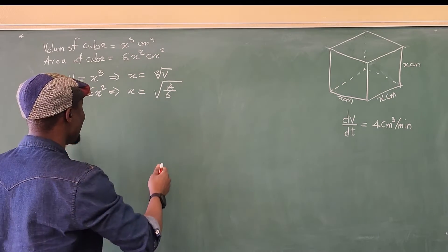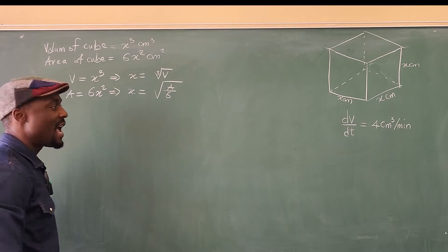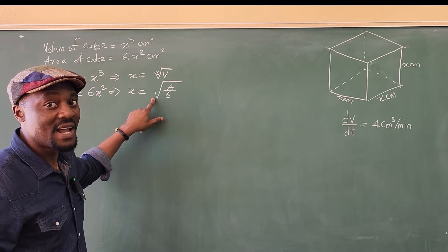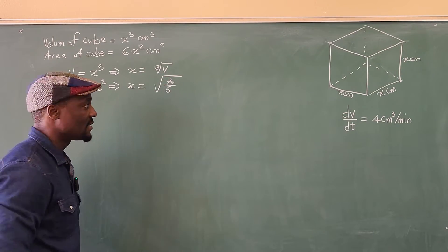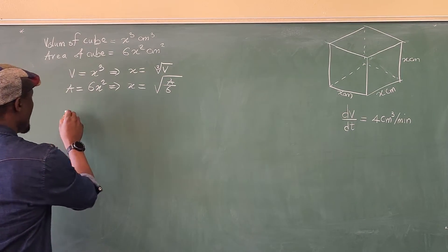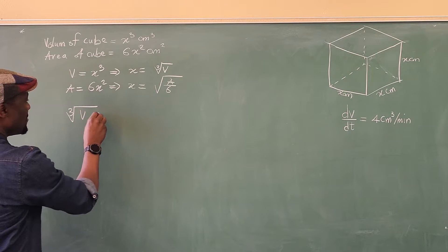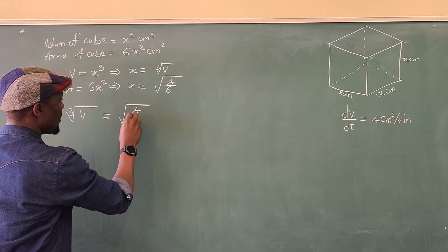So all you have to do is say since x equals x, this must be equal to this. And we don't do plus or minus here because we don't care. Because the side of a cube must be positive. So what do we do next? Connect the equations. Say that the cube root of V must be equal to the square root of A over 6.